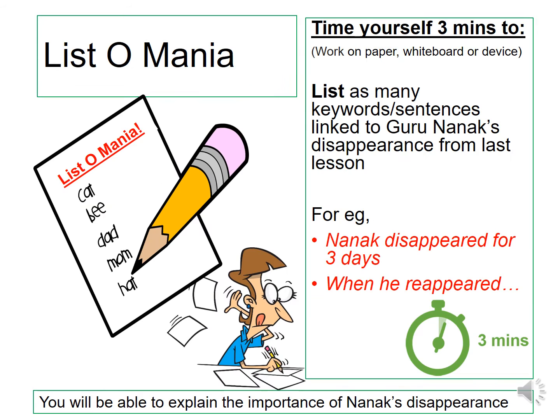The first thing I'm going to ask you to do is to time yourself three minutes. In those three minutes you're going to be listing as many keywords or sentences linked to Guru Nanak's disappearance as you can. For example, Nanak disappeared for three days — when he reappeared, what happened? You need to finish that sentence.